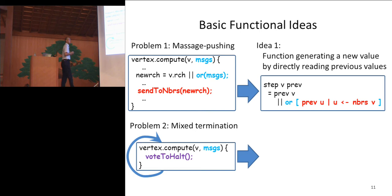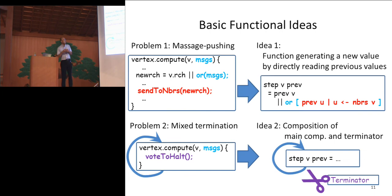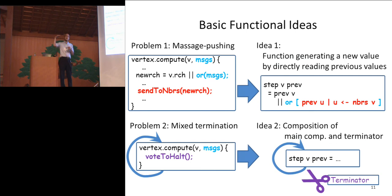For the second problem, we want to decompose the termination from the main computation. The main computation repeats iteration, and outside this iteration, a terminator stops the computation. In other words, we want to make the whole computation a composition of the main computation and termination. These are the two basic ideas of the functional approach.